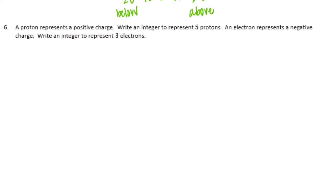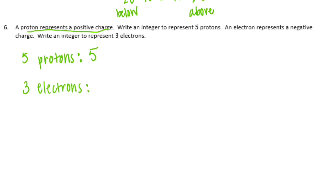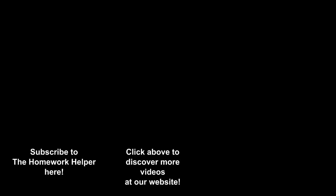Number 6: A proton represents a positive charge — write an integer to represent five protons. An electron represents a negative charge — write an integer to represent three electrons. Since a proton is a positive charge, five protons would be represented by 5. Since an electron is a negative charge, three electrons would be represented by negative 3.